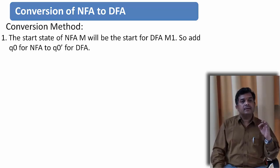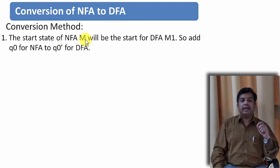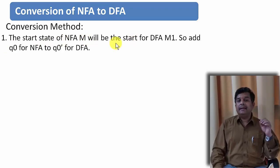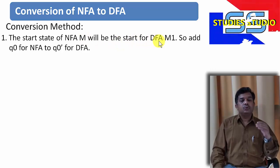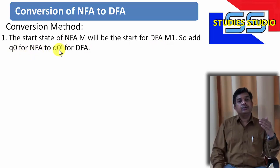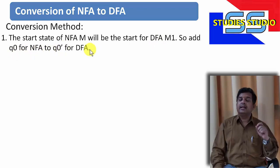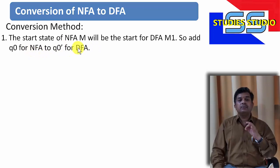The first step is: the start state of NFA — let the machine be M — will be the starting state of the DFA. So I will add this starting symbol. Let us say Q0 in NFA; I will write it as Q0-DES in DFA. So the starting symbol must be the same.